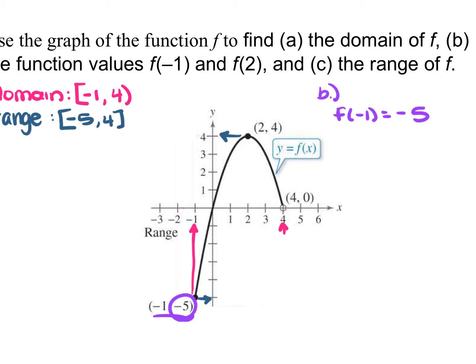Next we find f of 2. We find the ordered pair that has 2 as our x, which is the ordered pair (2, 4). We pull the y-value from that ordered pair, and that's what f of 2 is equal to — so f of 2 equals 4.